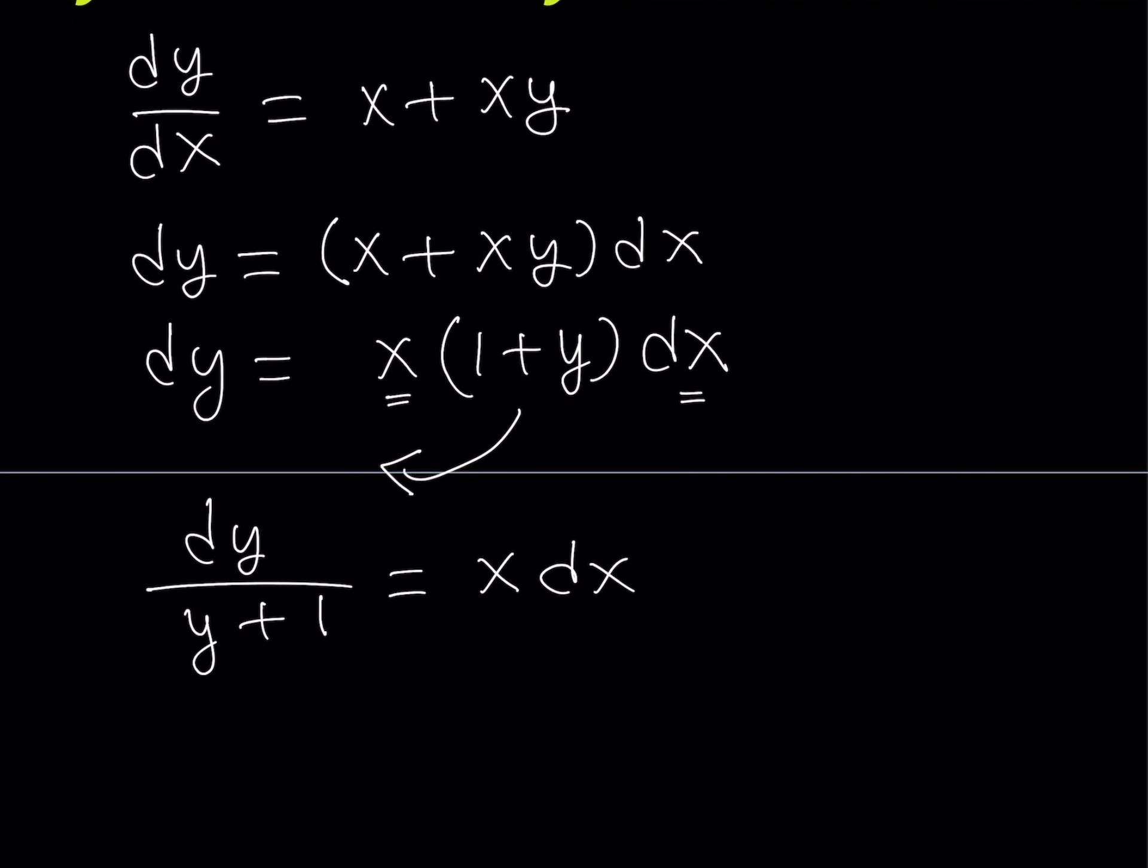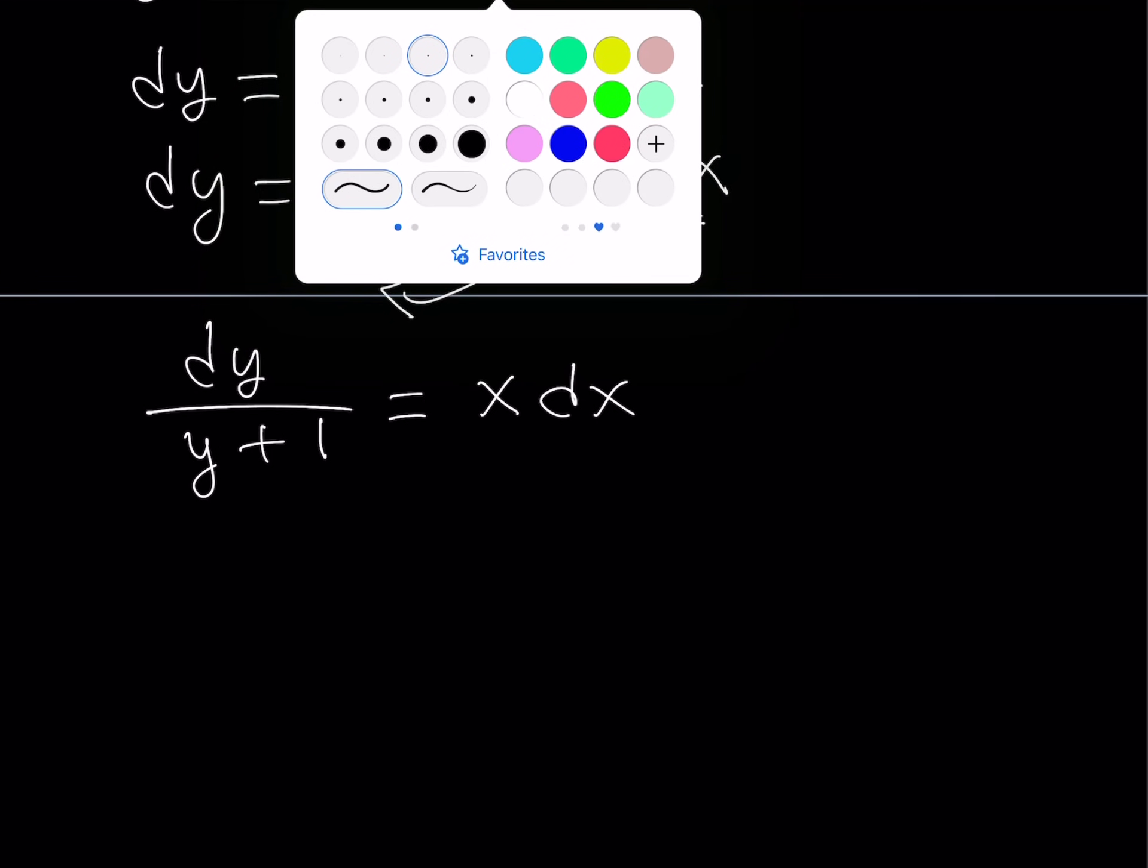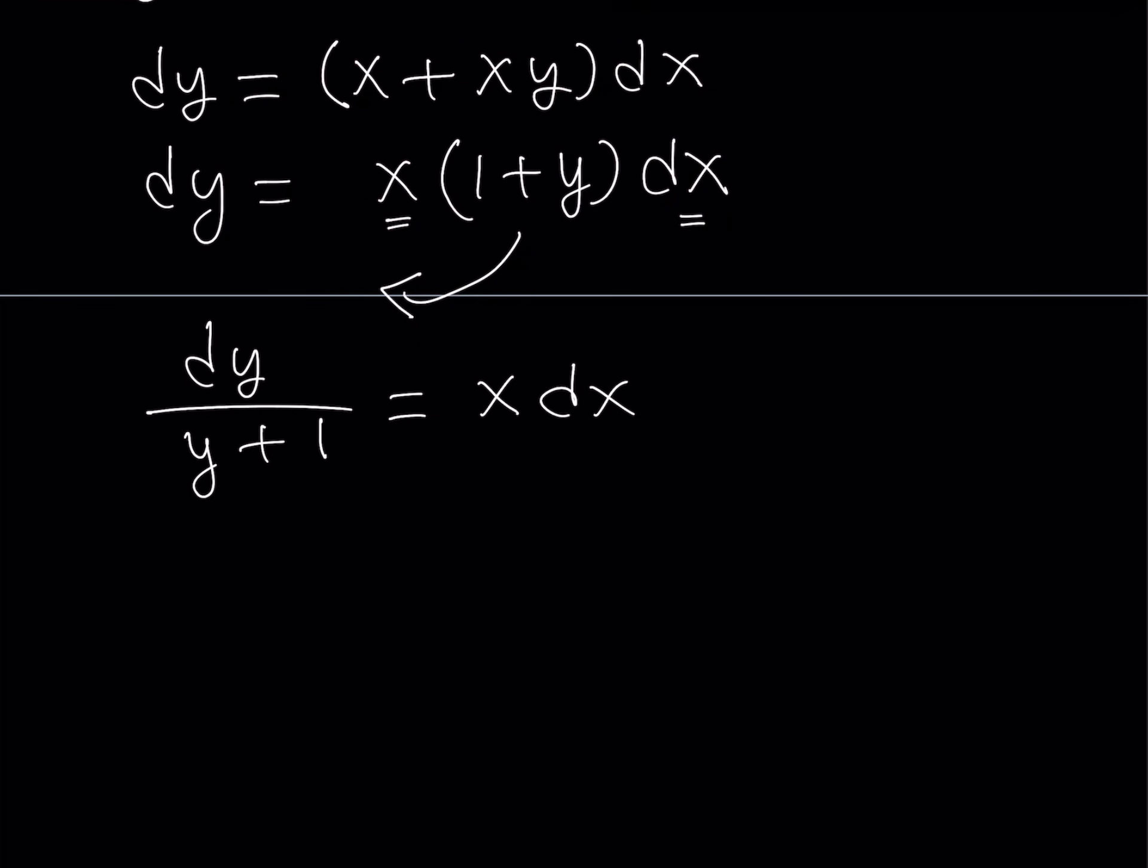So far, we haven't really done any calculus or differentiation or any integration. The only thing we've done was algebra. We cross-multiplied, separated the variables, factored, and so on and so forth. Nothing calculus so far. Now, at this point, I was able to separate the variables, and I'm going to integrate both sides. This is why these equations are called separable, because you can separate the variables.